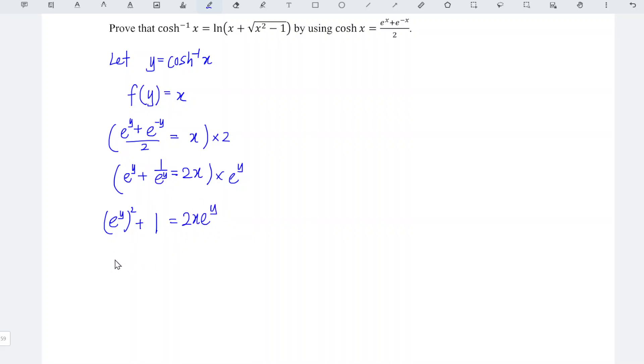Rearrange the equation, we obtain e to the power of y square minus 2x e to the power of y plus 1 is equal to 0.